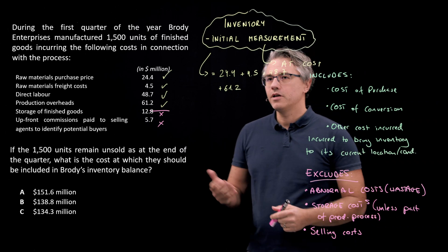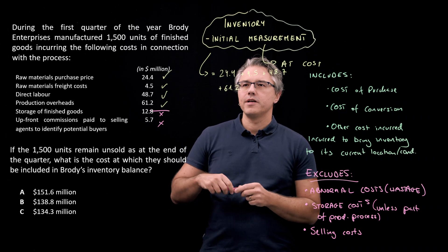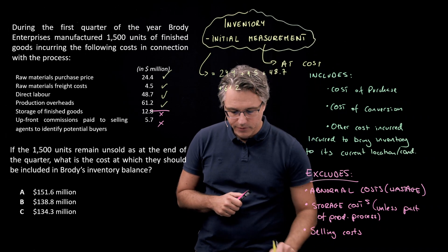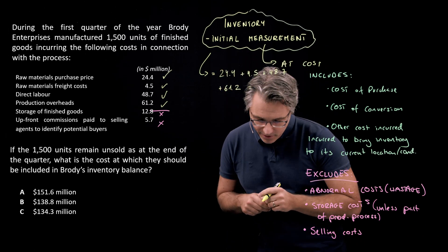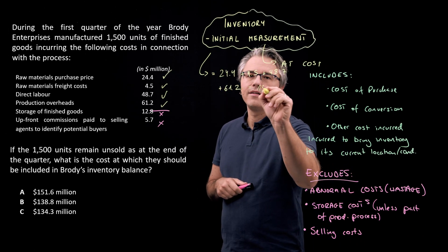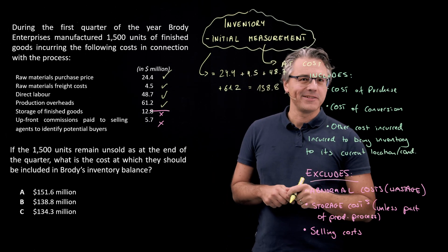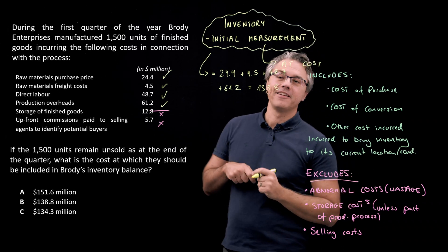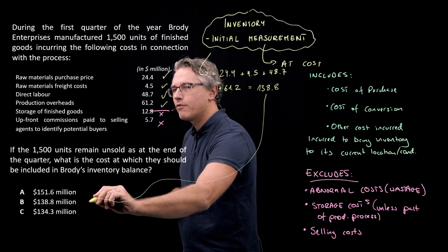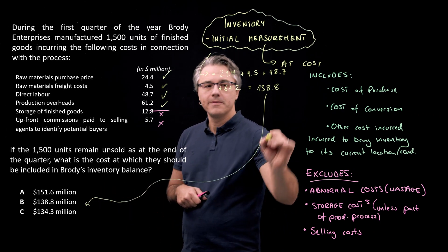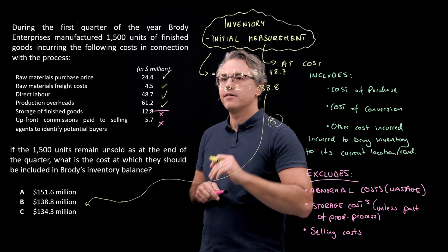So we've got the items 24.4, 4.5, 48.7, and 61.2. If we add these up, we get an answer of 138.8. I had to look at my notes — should have taken out my calculator, but I calculated it earlier. And this corresponds very nicely to answer B, which says 138.8. So that's the answer to the question.